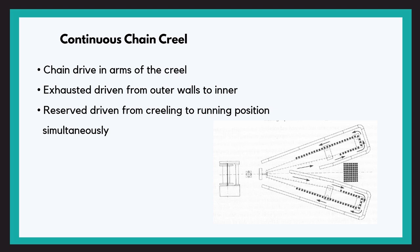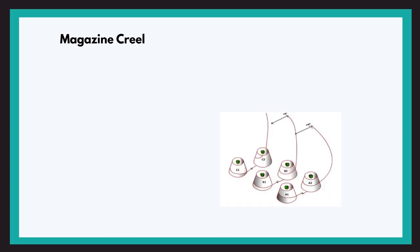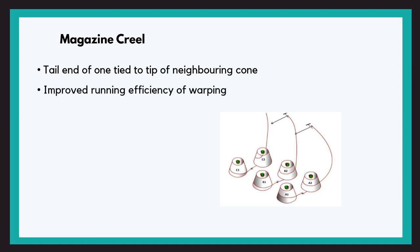This additional time is saved in the magazine creel. The tail end of yarn from one cone is tied with the tip of the yarn of a neighboring cone. When the first cone is exhausted, the transfer of yarn withdrawal to the second cone takes place automatically and the machine doesn't stop. However, due to a sudden change in the unwinding position and variation in tension, some yarns break during this transfer, which is known as transfer failure.